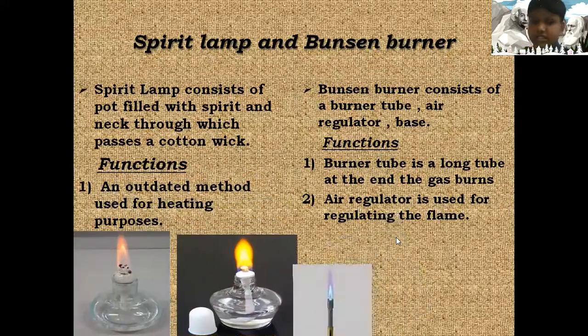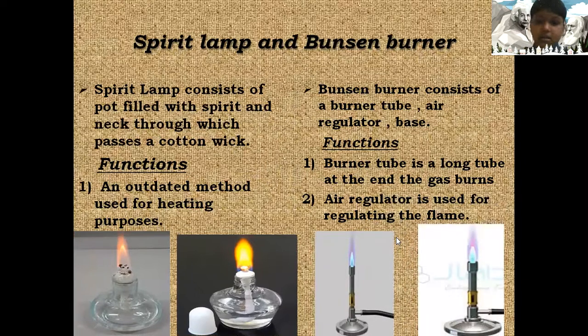Bunsen burner consists of a burner tube, air regulator, and a base. Functions: Burner tube is a long tube at the end where the gas burns.